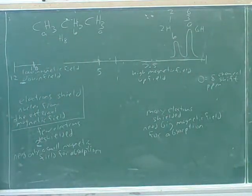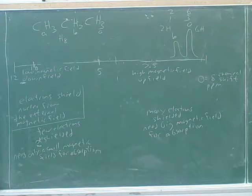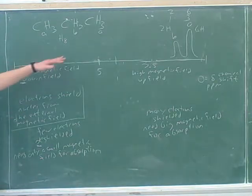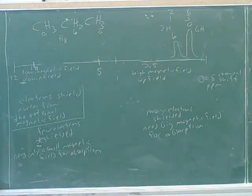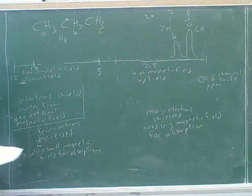Okay, so we won't spend too much time on that, but that's the third piece of information. So the first piece of information was the number of peaks. The second piece of information was the chemical shift, the horizontal position. The third piece of information is the integration. The area under the curve tells you how many hydrogens it represents. And now we're ready for the last piece of information, which is splitting.